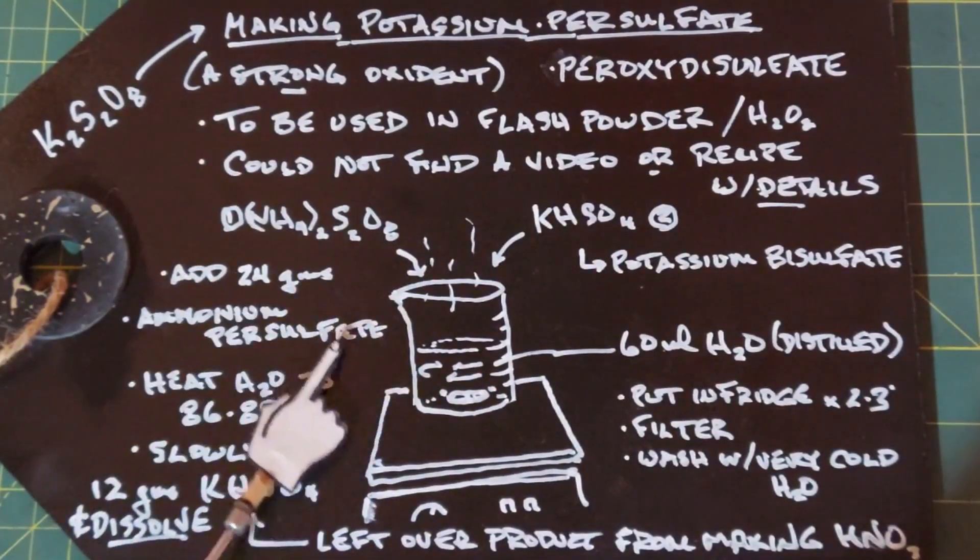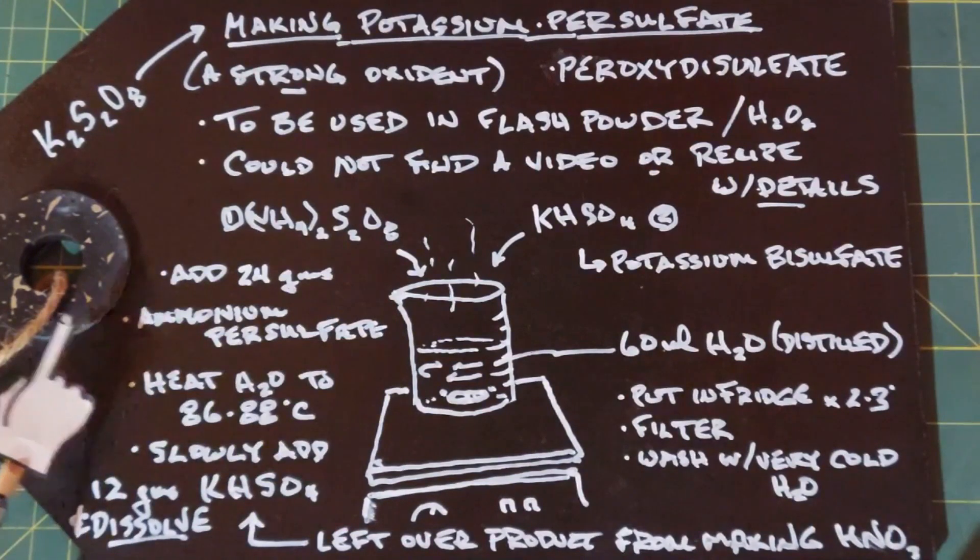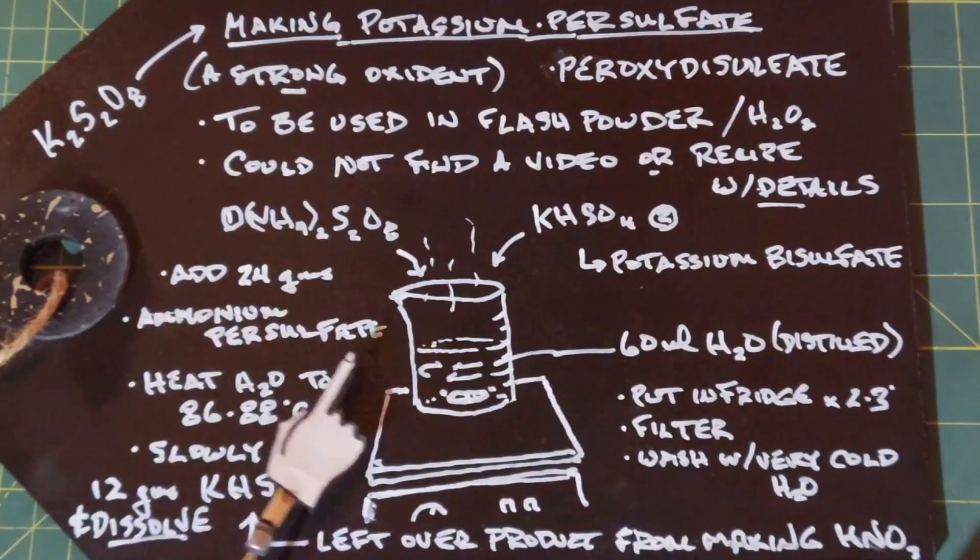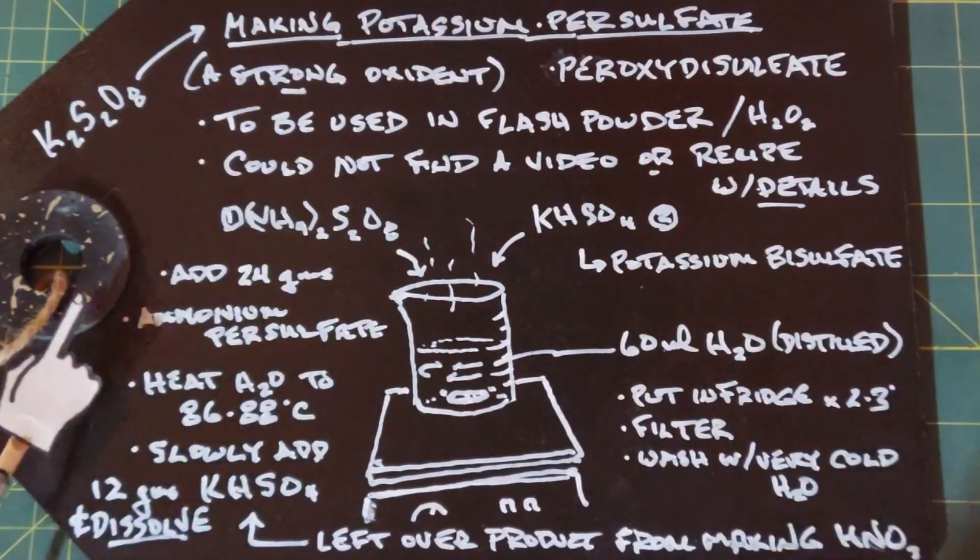Ammonium persulfate is commonly used to etch metals, especially copper. And you can find it online. It's relatively cheap.